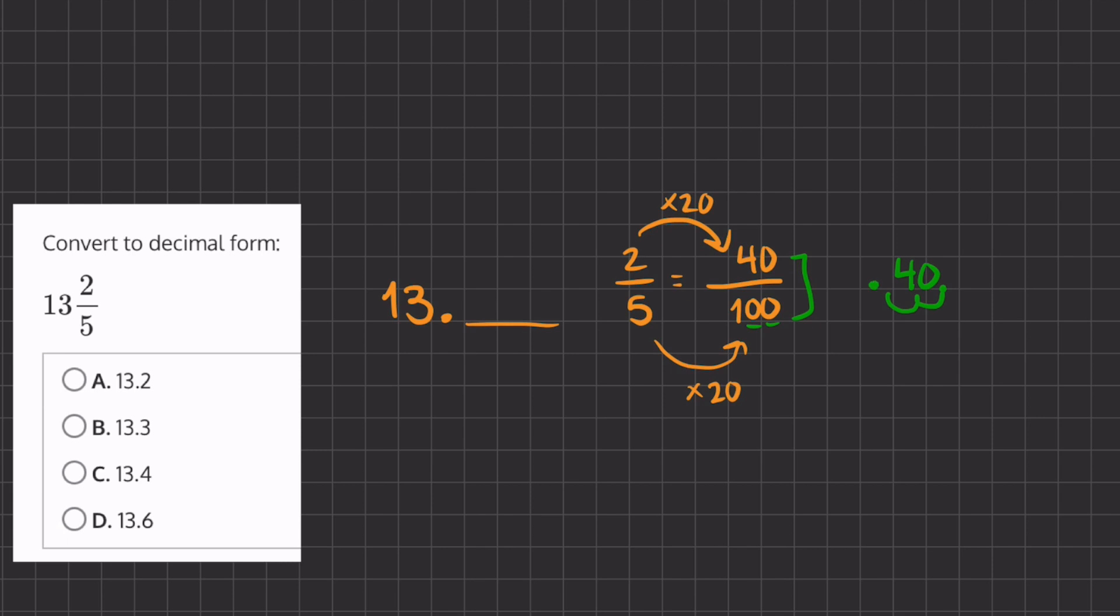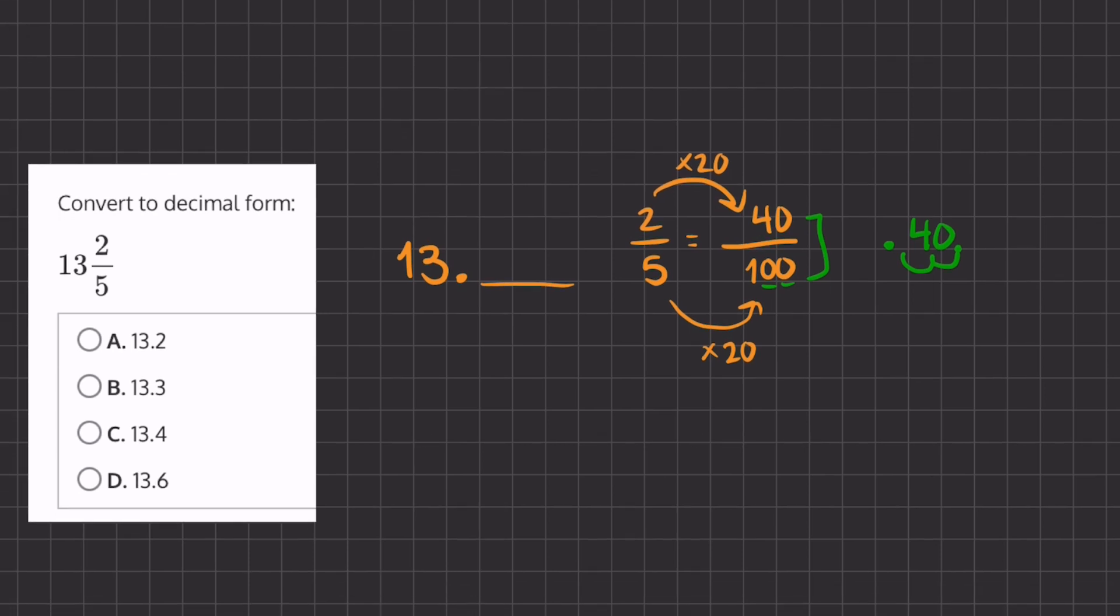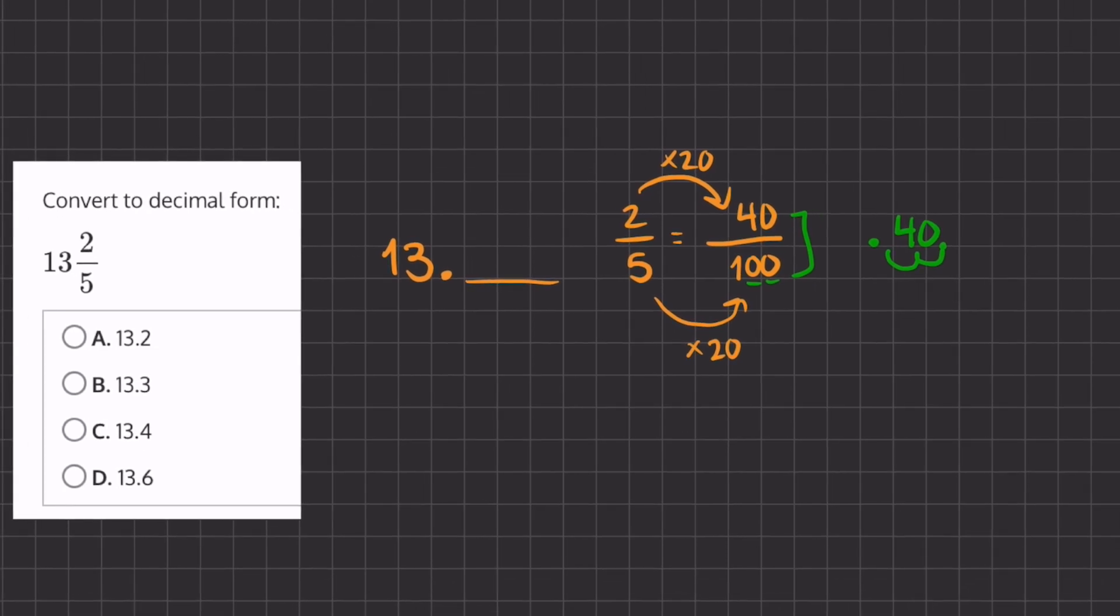We always move the decimal the same amount as the number of zeros we have after the 1. In this case, we have two zeros after the 1, so we'll move our decimal place two times to the left. The decimal for 2/5 is going to be equal to 0.40.